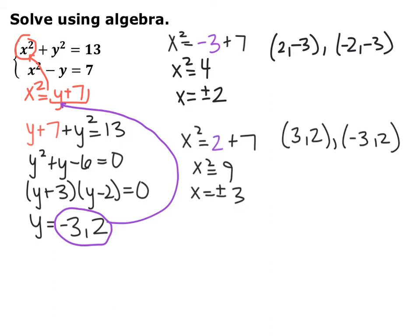When you plug in y equals 2, you get x squared equals 9, which means x equals plus or minus 3. So you end up with four solutions: (2, −3), (−2, −3), (3, 2), and (−3, 2). Always make sure when you're taking the square root, you include the plus or minus.